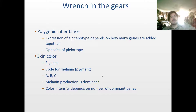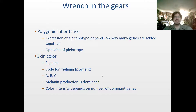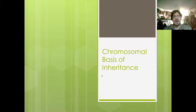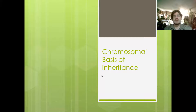So if anyone tells you skin color is indicative of anything besides three genes that code for melanin, you have my express permission to slap them in the face. Now it's time to bust into something slightly different from Mendelian inheritance — and that's when we talk about inheritance on the chromosomal level.